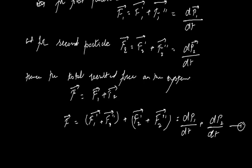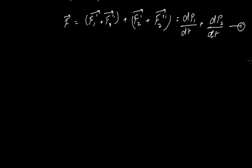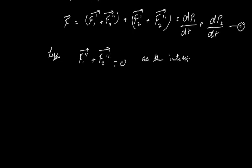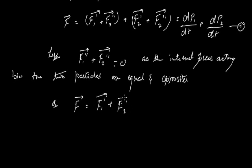Here, F1 double dash plus F2 double dash are equal to zero, because the internal forces acting between the two particles are equal and opposite. That is, F1 double dash equals negative F2 double dash, so the internal forces cancel out.